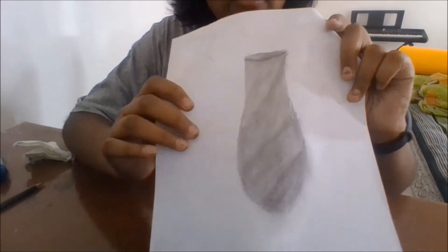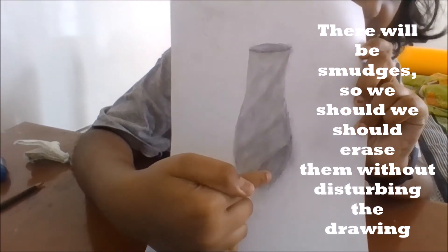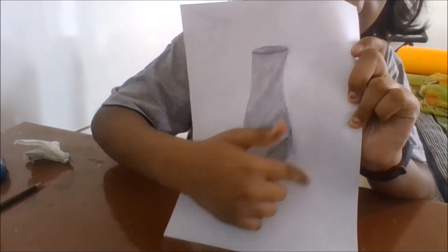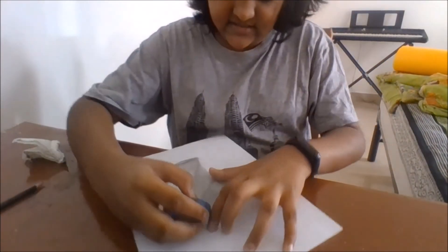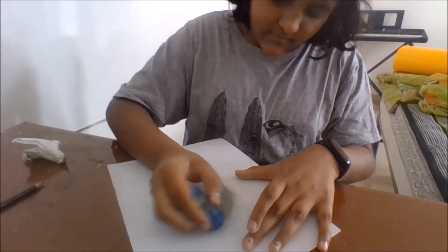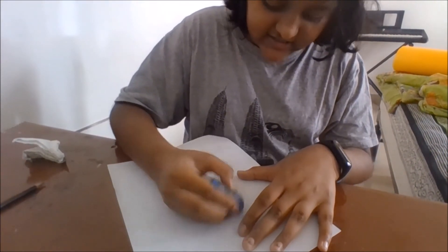Now we are done with the shading process. There will be smudges, but we should erase them using an eraser without disturbing the drawing. Now you want to be very careful in this process because it requires that you look at the drawing in a proper manner.